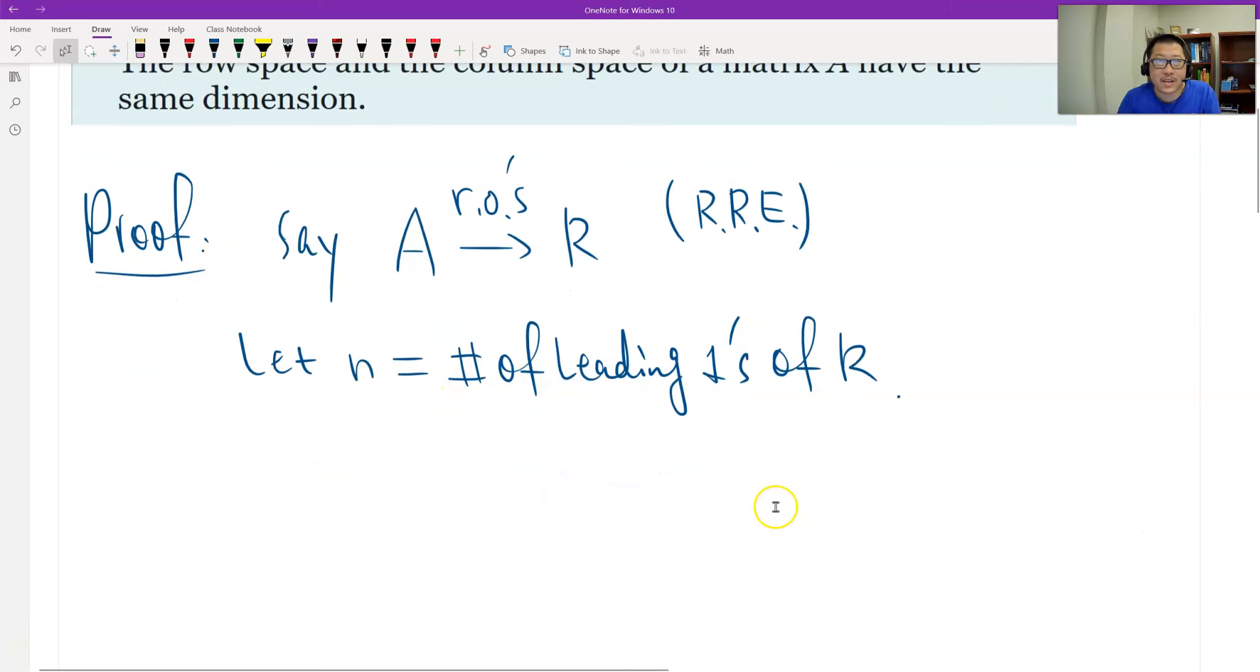First, let's look at the row space. What is the row space of A? What is the dimension of the row space? We have a theorem before: row operations do not change the row space of A. Therefore, the row space of A equals the row space of R. That's the theorem 4.8.3.